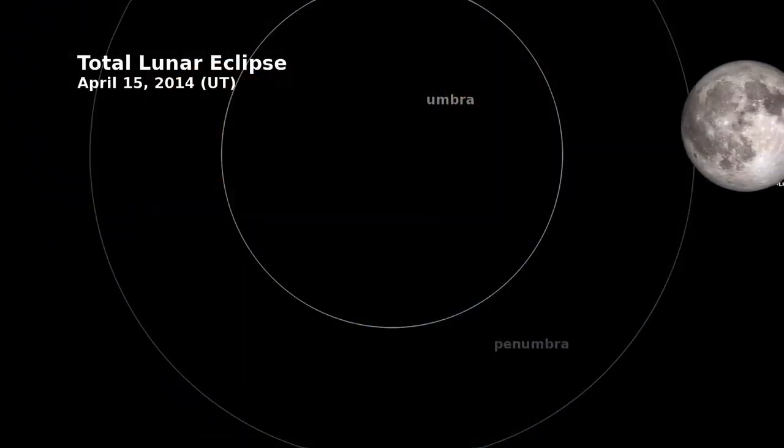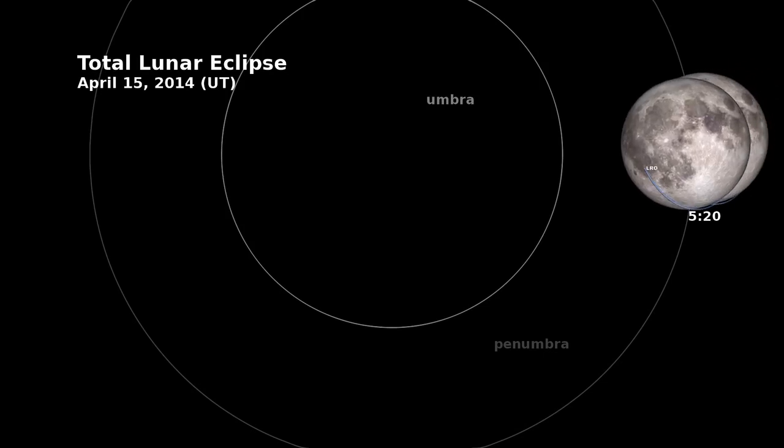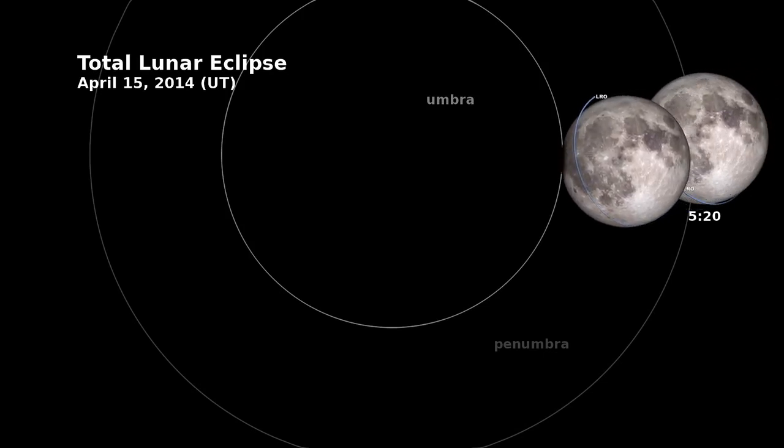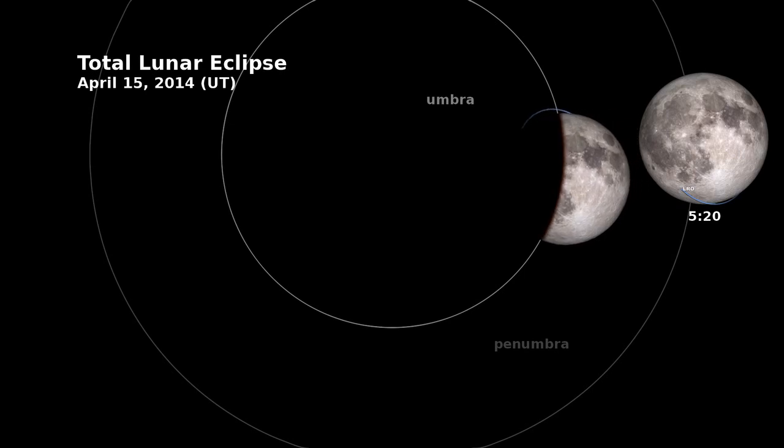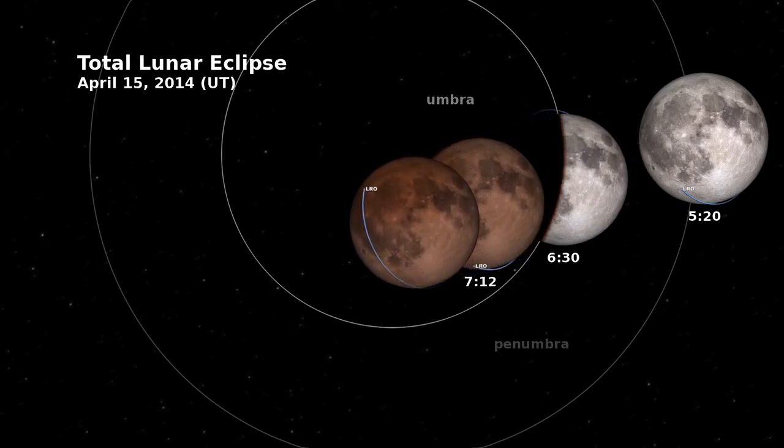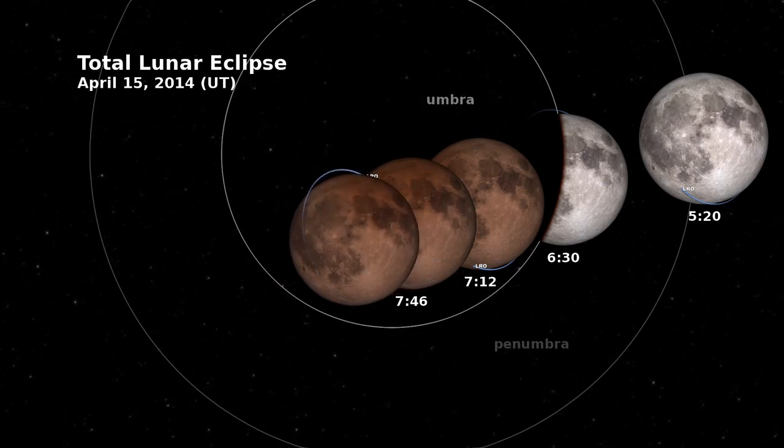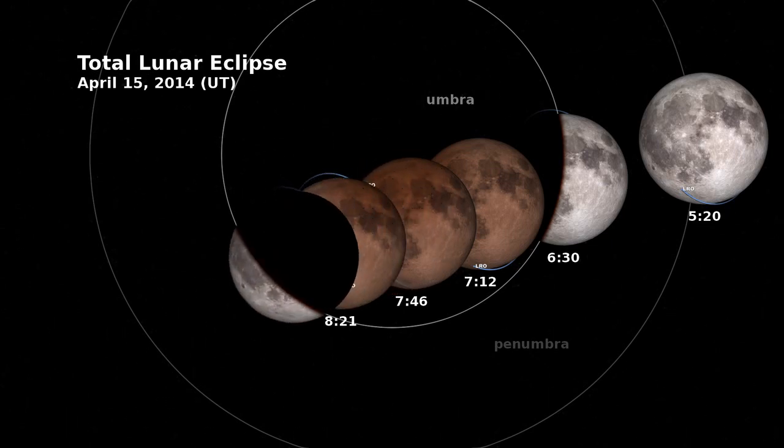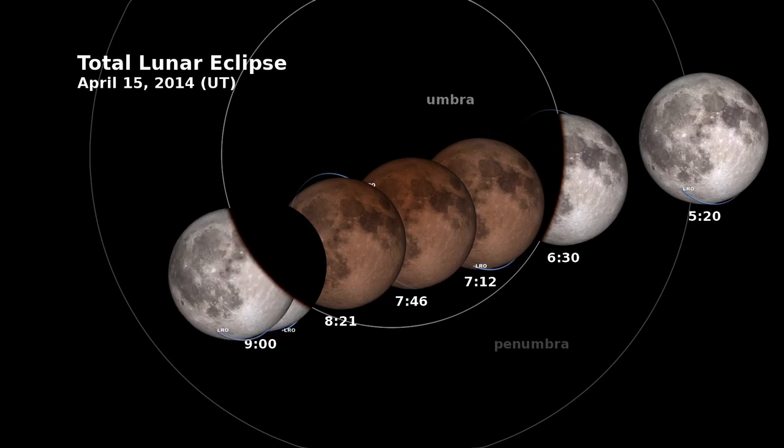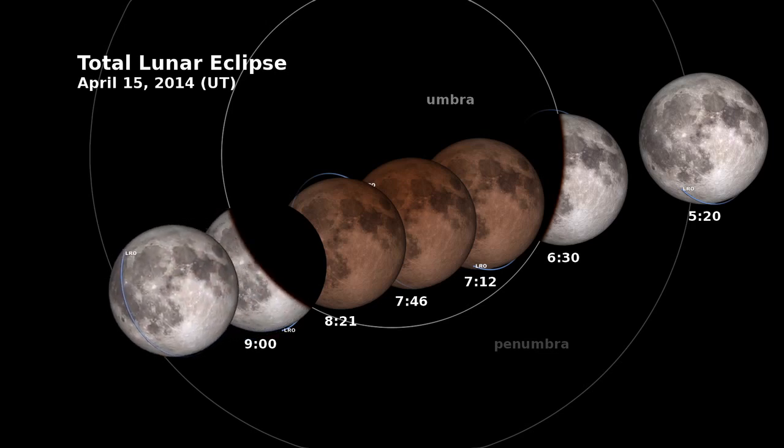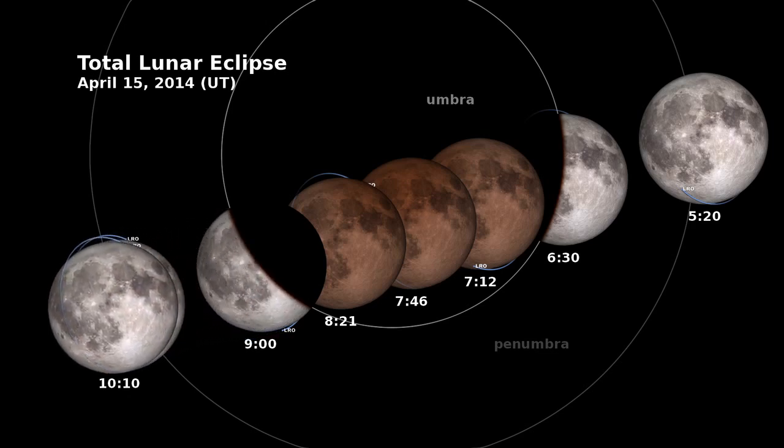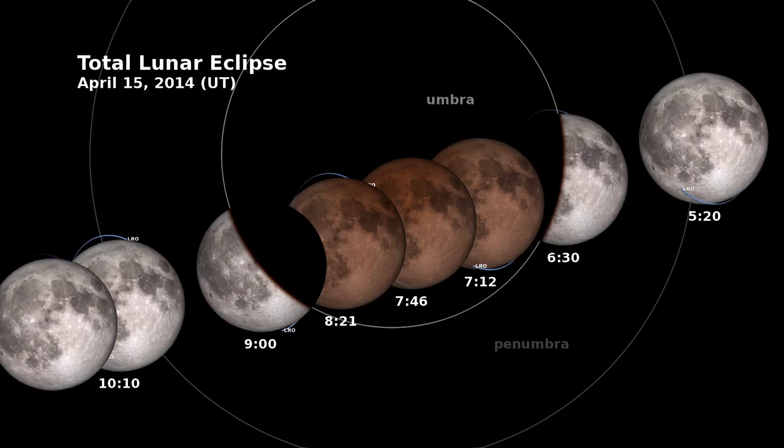What we see in this animation is a recreation of LRO orbiting the moon during the upcoming eclipse. When the moon passes into the Earth's umbra, or the Earth's shadow, that's when it is completely blocked from the sun, and we see the effect of Earth's sunsets being projected onto the lunar surface. That's why it turns a hue of red. When the moon comes out of the Earth's umbra, it begins to look, as we've always seen it, this beautiful bright gray orb in the sky.